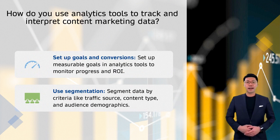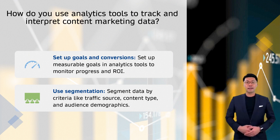Now that you have set up your tracking systems, it's time to put your analytics tools to work. The first step is to set up goals and conversions in your analytics tools that reflect your content marketing objectives, such as website traffic, leads generated, or sales. This will allow you to track progress toward these objectives and measure the ROI of your content marketing efforts. Once you have set up your goals, use segmentation to break down your data by different criteria, such as traffic source, content type, or audience demographics. This can help you better understand which content is performing well and which may need optimization.